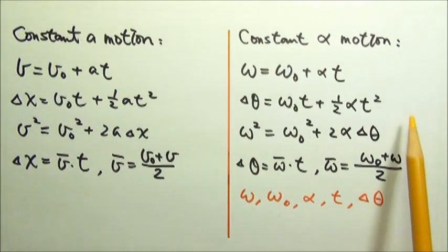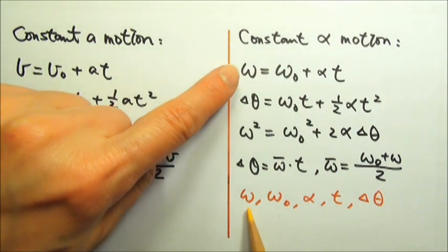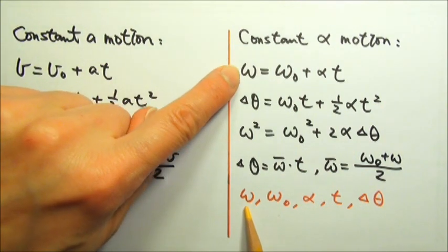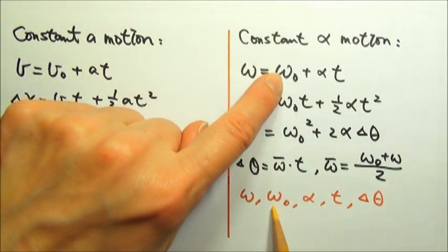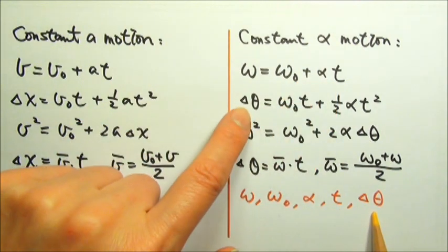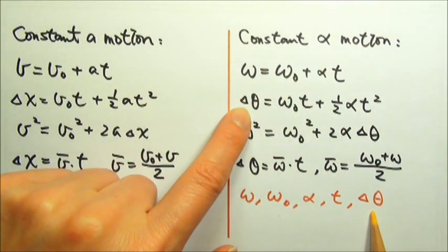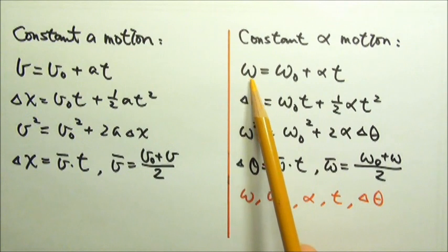There are five quantities involved: final angular velocity, initial angular velocity, angular acceleration, time, and angular displacement. And in each equation, there are four of these quantities involved.